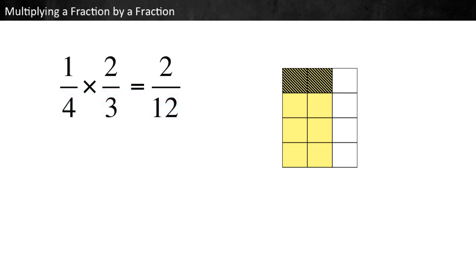We can multiply the numerators of the factors to find the numerator of the product, and we can multiply the denominators of the factors to find the denominator of the product. Multiplying fractions, you just multiply across.